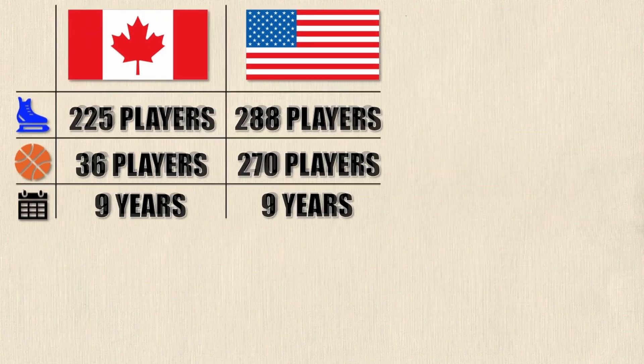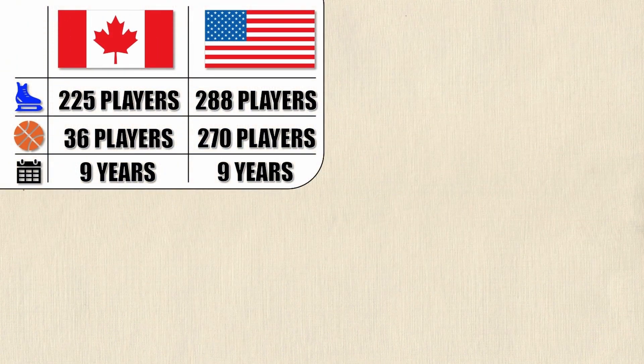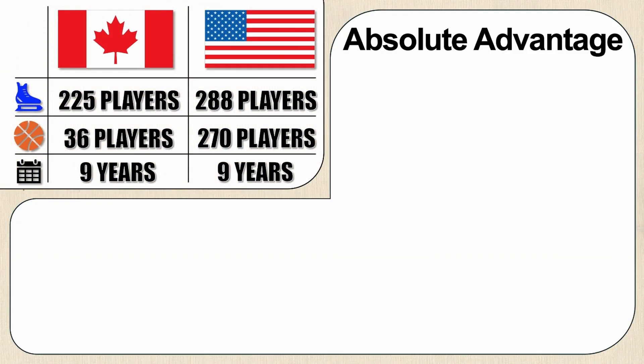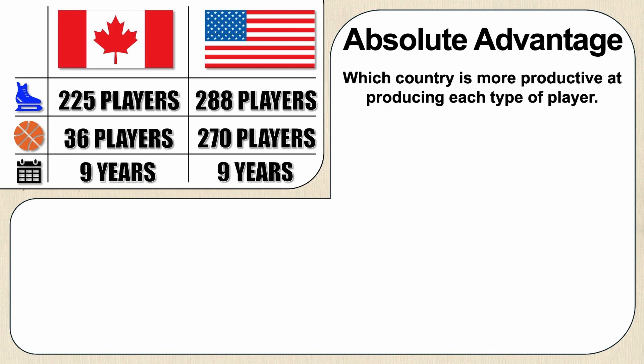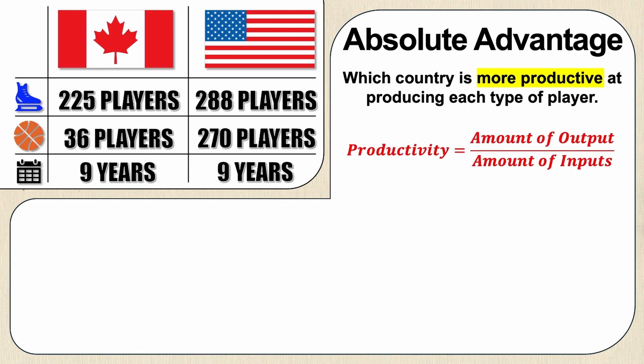With the example set up, let's take a look at our first type of advantage: absolute advantage. As a reminder, absolute advantage is looking at which country is more productive at producing each type of player. You might be wondering, well how do you value who's more productive? There's a nice easy formula for it: productivity is equal to the amount of output divided by the amount of inputs. Someone who's more productive is going to be able to create more output with fewer inputs, so the denominator will be lower and the numerator will be larger.